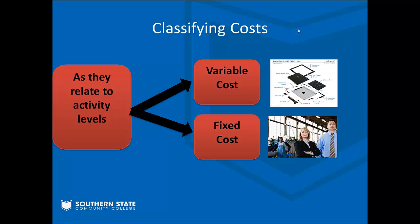To recap: variable costs in total go up or down based on how many units we make, but per unit they stay the same within a relevant range. Fixed costs exhibit the exact opposite behavior — in total they stay the same, but the per-unit cost goes up or down depending on how many we make. The more we make, the more we spread that fixed cost out per unit, making it go down.